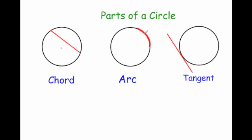An arc is part of the circumference. If it's smaller than halfway around then it would be a minor arc, and the larger section would be the major arc. Normally in a GCSE exam you're just asked what it's called and it's called an arc — part of the circumference.